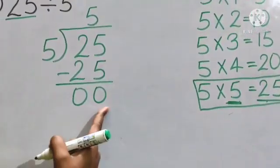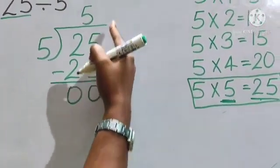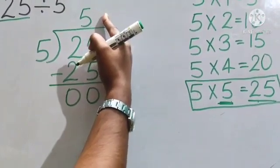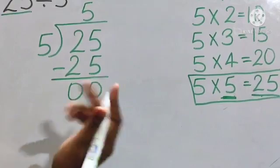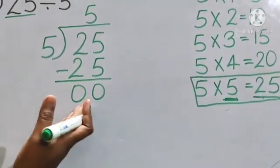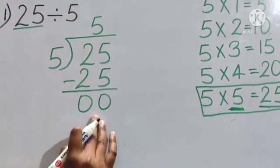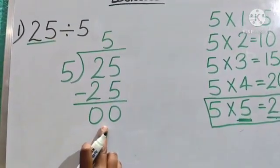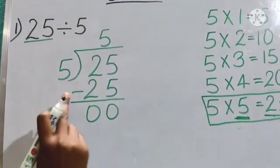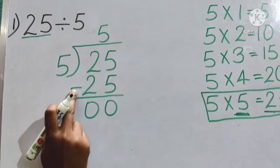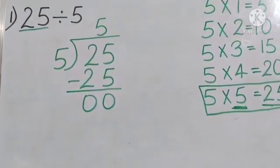This one I called the divisor, this one the dividend, and this one the quotient. After subtraction, nothing is left, so this one we call the remainder. Remember one thing: when you are going to divide, always give the subtraction sign here. This is the process to do long division.